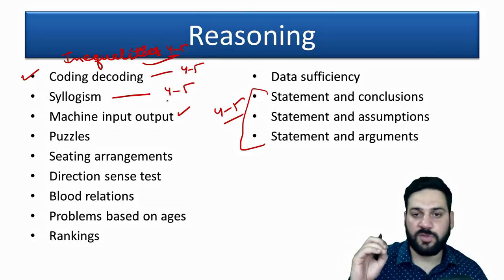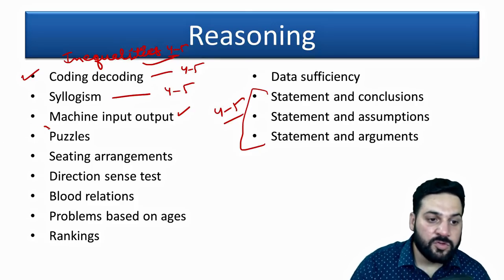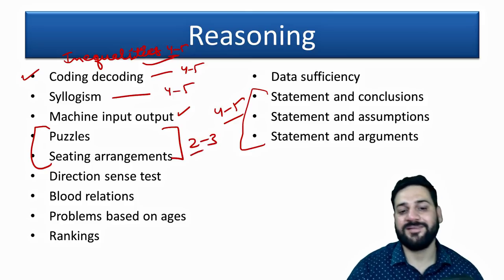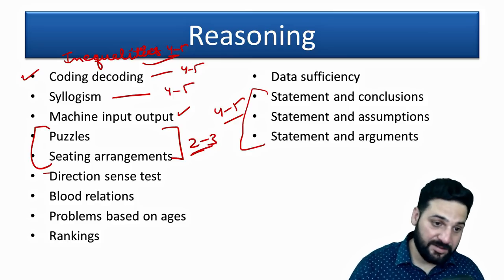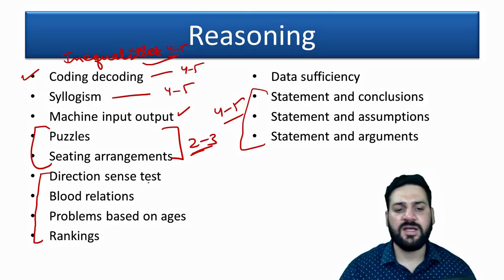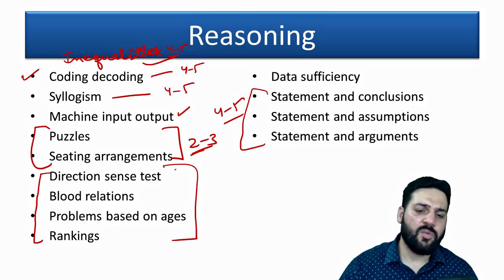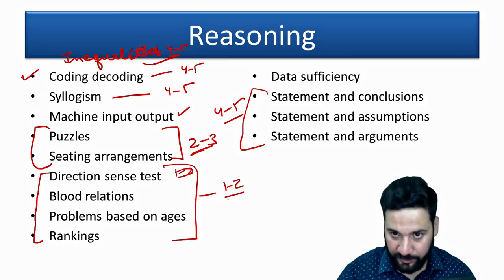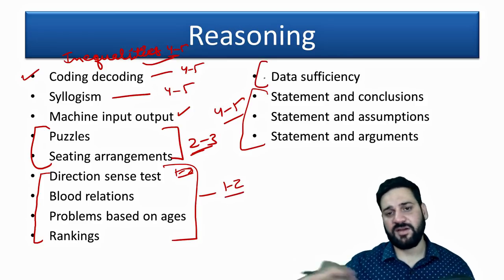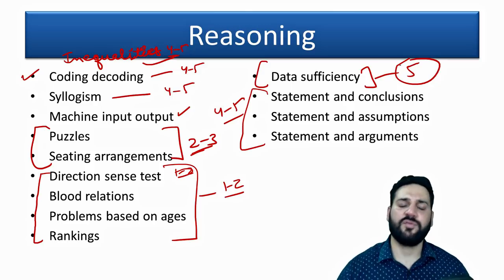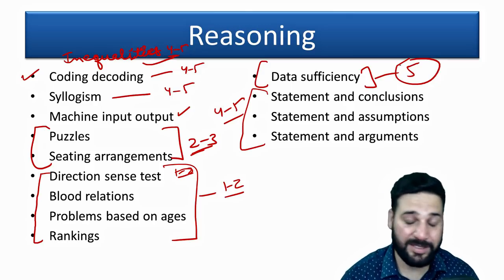Other reasoning topics include Puzzles and Seating Arrangements, Direction Sense Test, Blood Relations, Problems Based on Ages, and Ranking — expect one to two questions from each. Data Sufficiency, if it appears, will have a set of four to five questions. This covers the reasoning pattern for both Phase 1 and Phase 2.